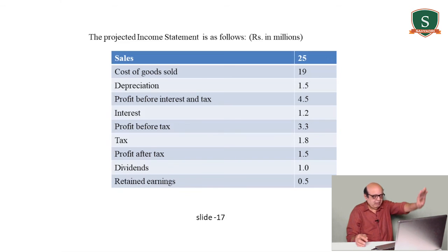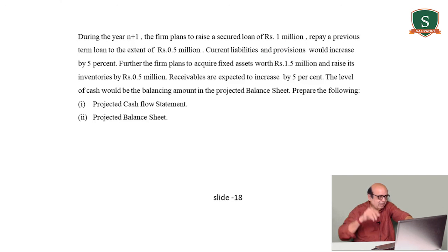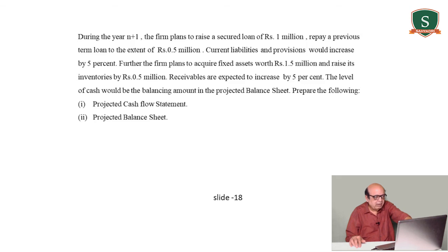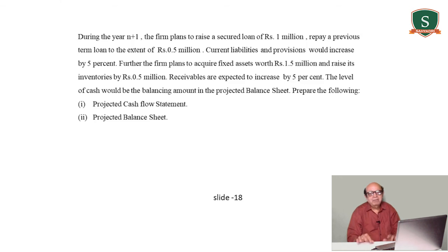Adjustments for year N+1: raise secured loan of 1 million, repay previous term loan of 0.5 million. Current liabilities and provisions would increase by 5 percent — note this differs from the first problem where there was no change. The firm plans to acquire fixed assets worth 1.5 million and increase inventories by 0.5 million. Receivables expected to increase by 5 percent. Cash is the balancing amount in the projected balance sheet. Prepare projected cash flow statement and balance sheet — check by ensuring balance sheet tallies.